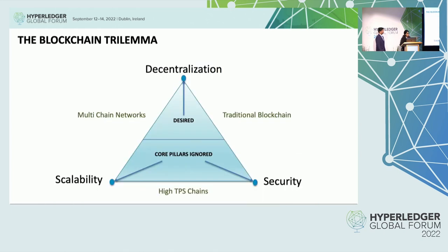This leads to a problem popularly known as the blockchain trilemma, a term coined by Vitalik. At any given point of time, you can achieve only two of the three points in the triangle: decentralization, security, and scalability. Traditional blockchains cannot achieve scalability. Projects claiming high TPS throughputs often achieve that through centralization — only a few selected nodes with specific hardware requirements can execute. There are also multi-chain networks, which ties back to the island network concept.